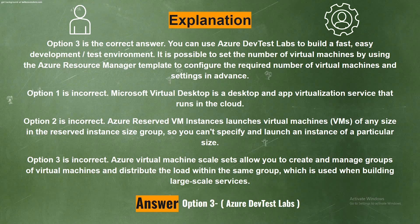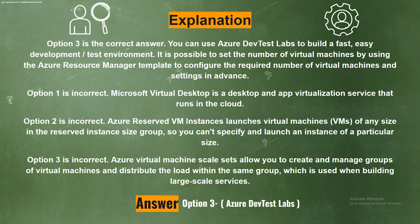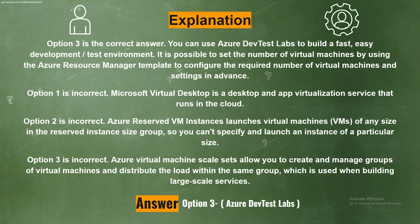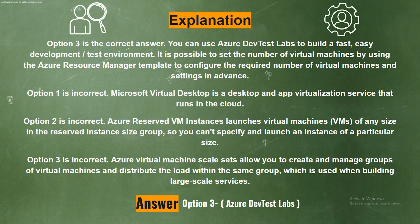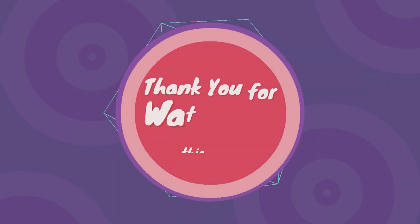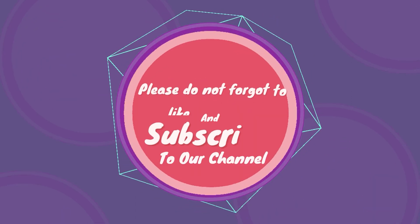Option two is incorrect — Azure Reserved VM Instances launches virtual machines of any size in the reserved instance size group, so you can't specify and launch an instance of a particular size. Option three is incorrect — Azure Virtual Machine Scale Sets allow you to create and manage groups of virtual machines and distribute the load within the same group, which is used when building large-scale services.